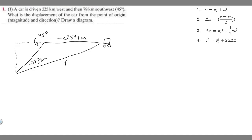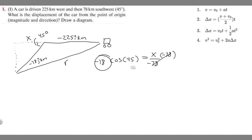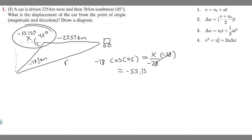We'll take the cosine of our angle, which is 45 degrees. Cosine equals adjacent over hypotenuse, so it's equal to x over minus 78. Multiplying both sides by minus 78 gives x equals minus 78 times cosine of 45 degrees. Plugging this into the calculator, x equals minus 55.15 kilometers. That length is labeled with i.